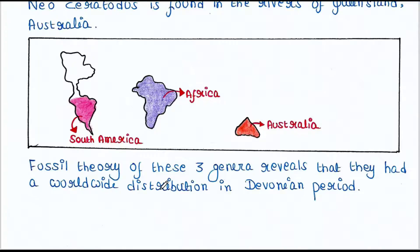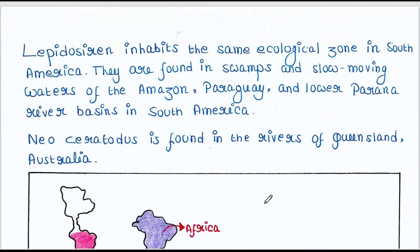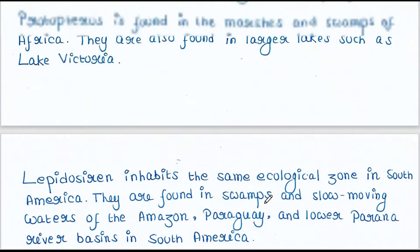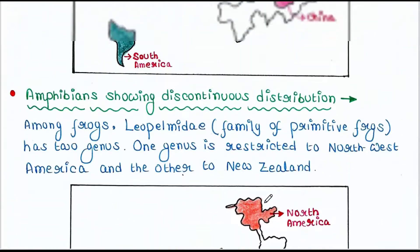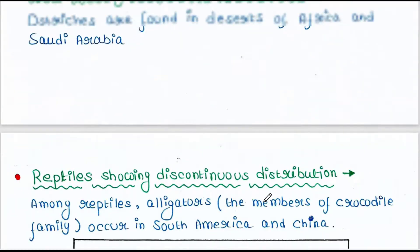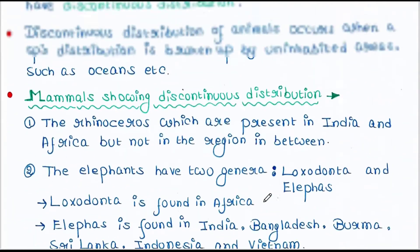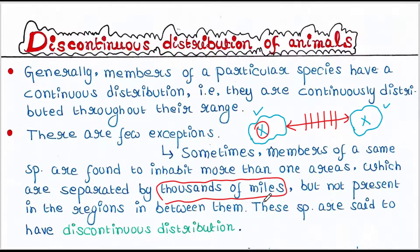Fossil records of these three genera reveal that they had a worldwide distribution in the Devonian period. This is all about today's lecture. I hope you liked it. Thank you for watching.